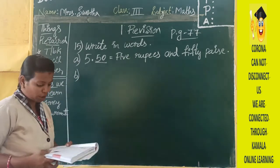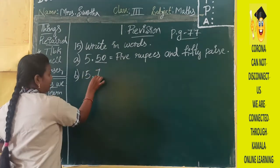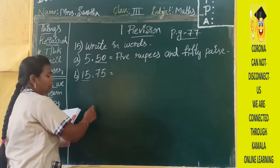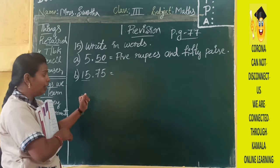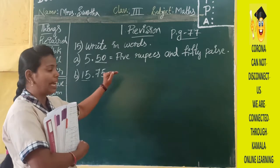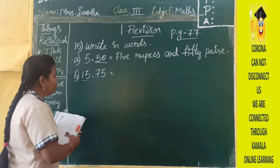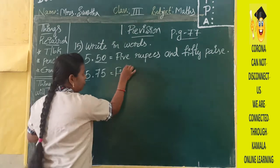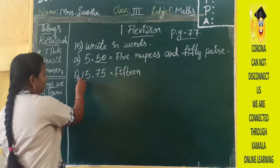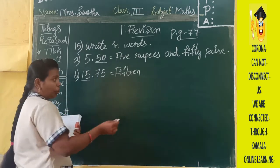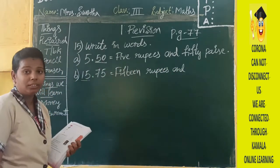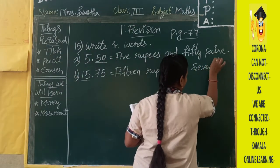In the same way, write the second one. What is the second one? One, five — fifteen — point, seven, five. You have to take two digits together. If you know number names, you can write this. One, five is fifteen. After the decimal point write 'rupees and', then seven, five is seventy-five.